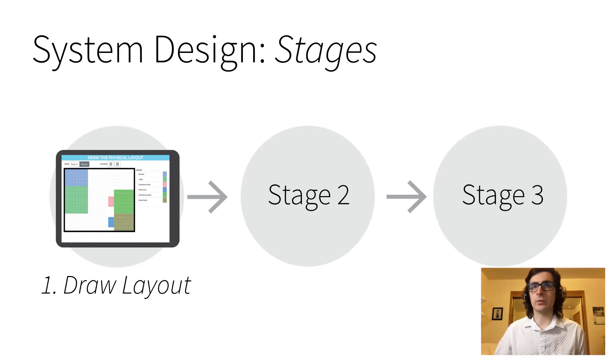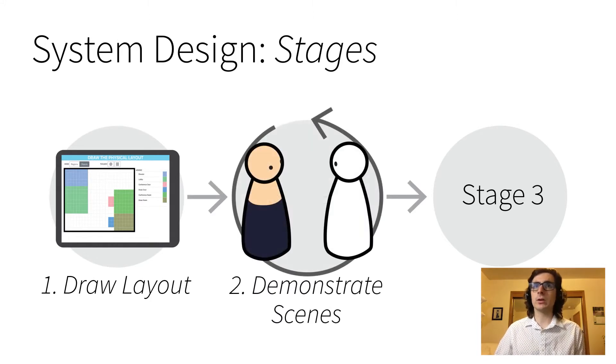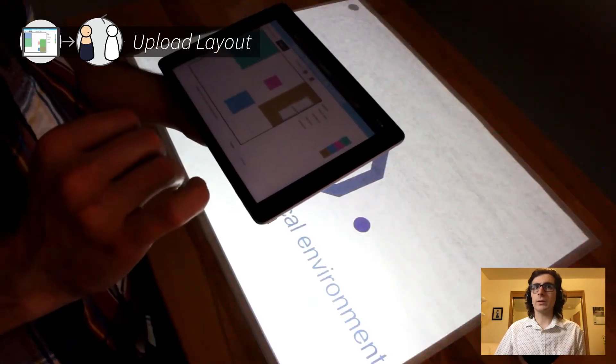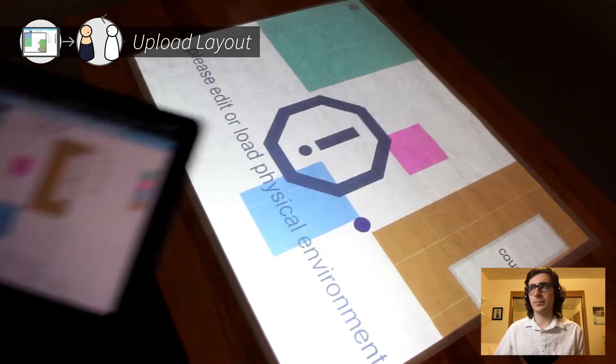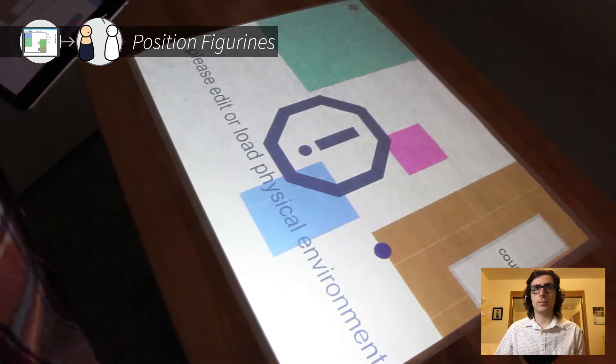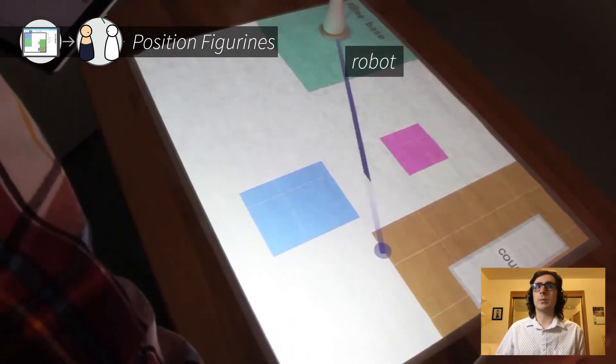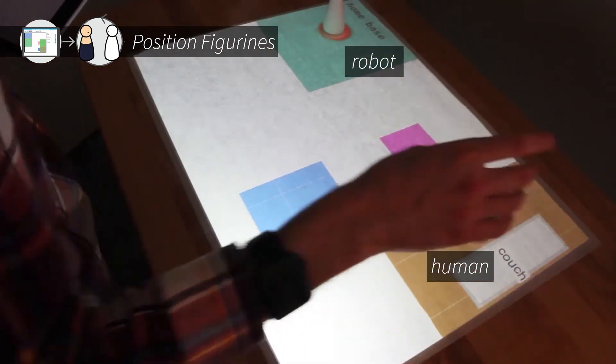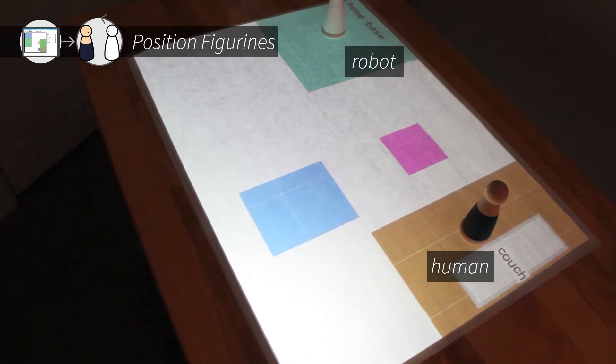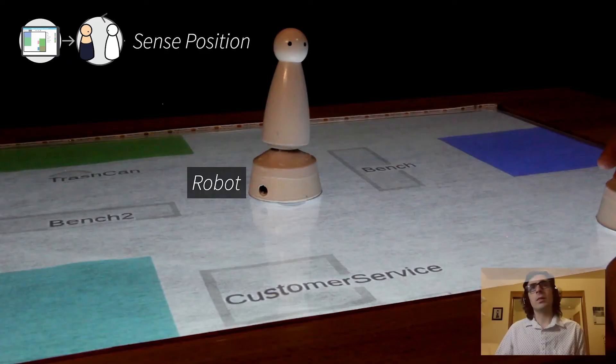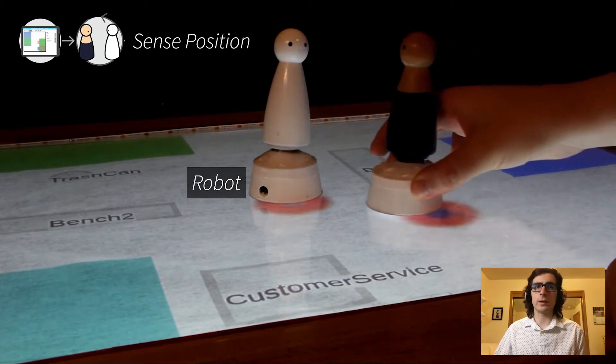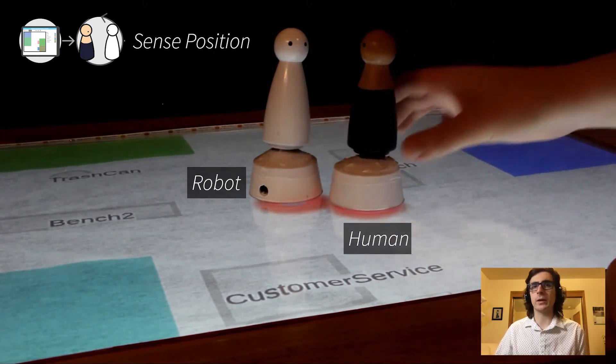After a layout is drawn, demonstrators will iteratively perform scenes on the tabletop with the figurines. To start, the layout uploads to the tabletop. Then both figurines can be placed on the tabletop, one of which represents the human, and the other which represents the robot.